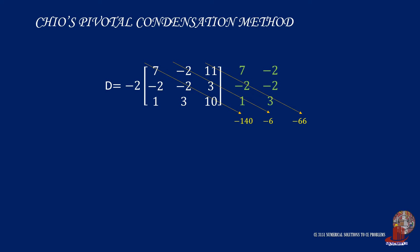Then subtract the products from the anti-diagonals. First of which has 1 times negative 2 times 11, which becomes negative 22. The next has 3 times 3 times 7, yielding 63. The last anti-diagonal has 10 times negative 2 times negative 2, which is 40. Simplify these products into negative 2 times the quantity of negative 140 minus 6 minus 66, minus the quantity of negative 22 plus 63 plus 40, which results to 586.